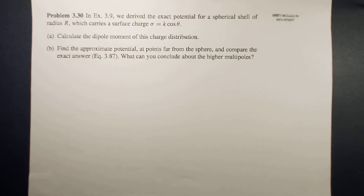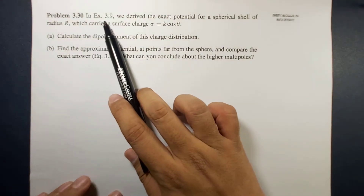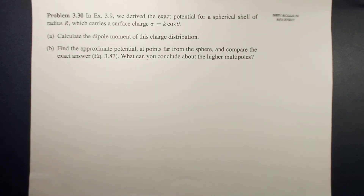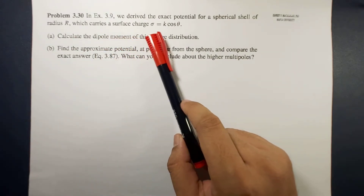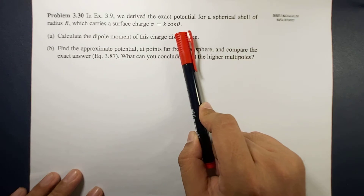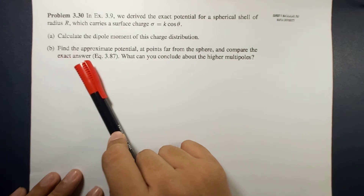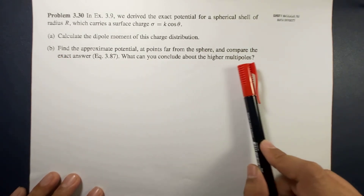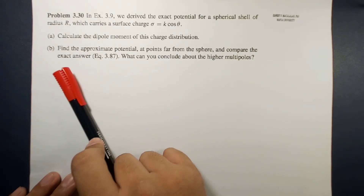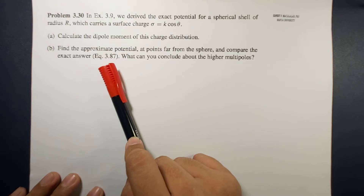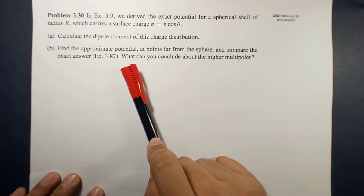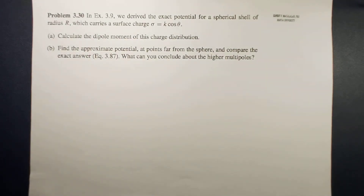Hello guys, what's up? This is me, Sir Ernest, and today we will have an example related to multipole expansion. The problem reads: in example 3.9, we derive the exact potential for a spherical shell of radius R which carries a surface charge σ = k·cosθ. Letter A: calculate the dipole moment of the charge. Letter B: find the approximate potential at points far from the sphere, and compare your answer to the exact answer in equation 3.87. What can you conclude about the higher multipoles?